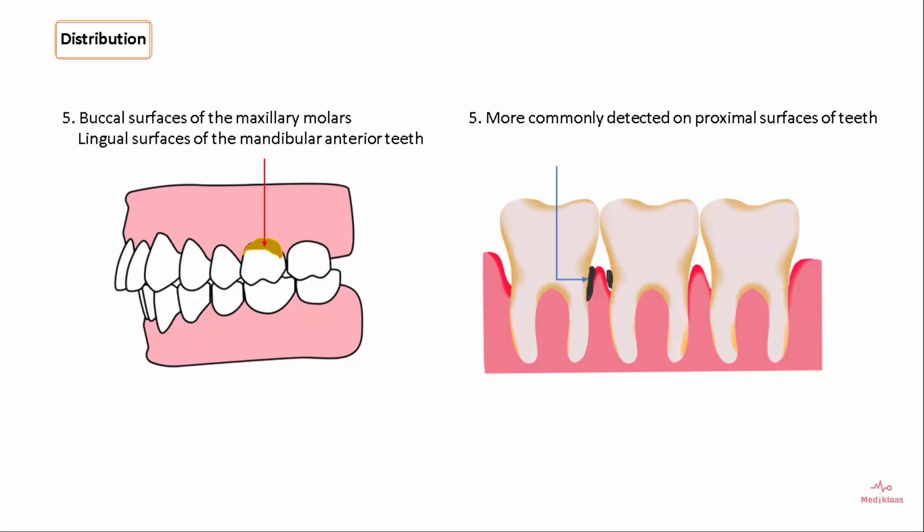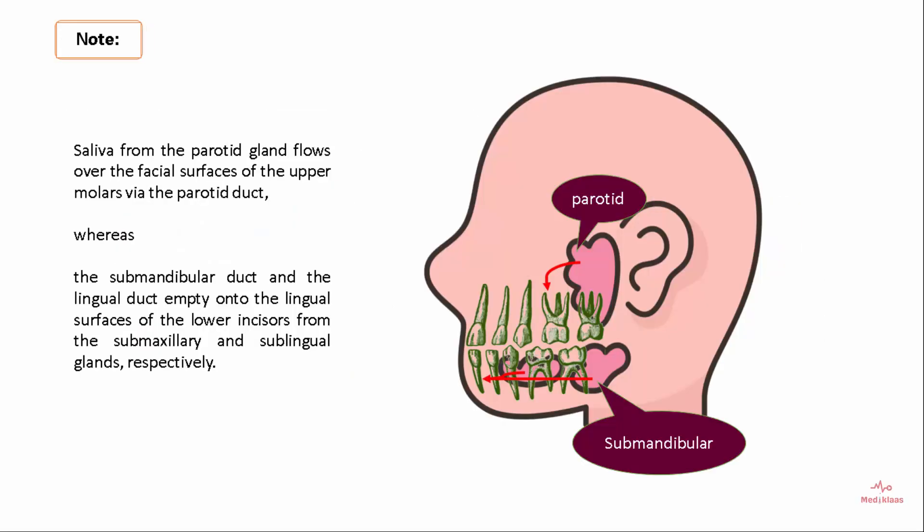In terms of distribution, supragingival calculus is located on the buccal surface of maxillary molars and the lingual surface of mandibular anterior teeth. Subgingival calculus is more commonly detected on proximal surfaces of various teeth. Saliva from the parotid gland flows over the facial surfaces of the upper molars via the parotid duct, whereas the submandibular and sublingual ducts empty onto the lingual surfaces of the lower incisors.